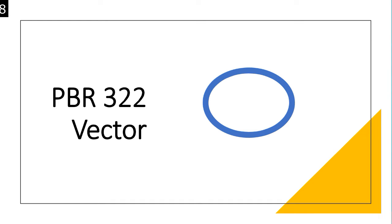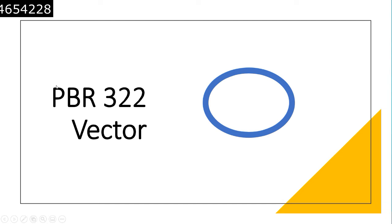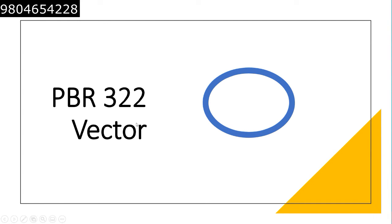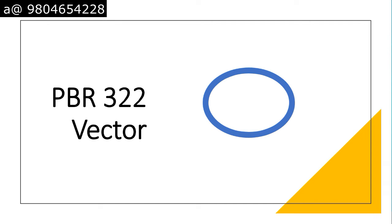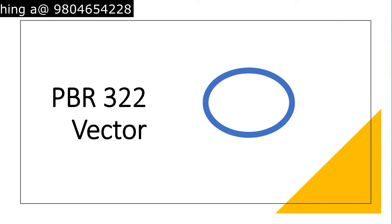Hello everyone, welcome to another video from Shomu's Biology. In this lecture we are going to talk about PBR322 vector. PBR322 is one of the most widely used plasmid vectors — it's a purposefully built plasmid vector.